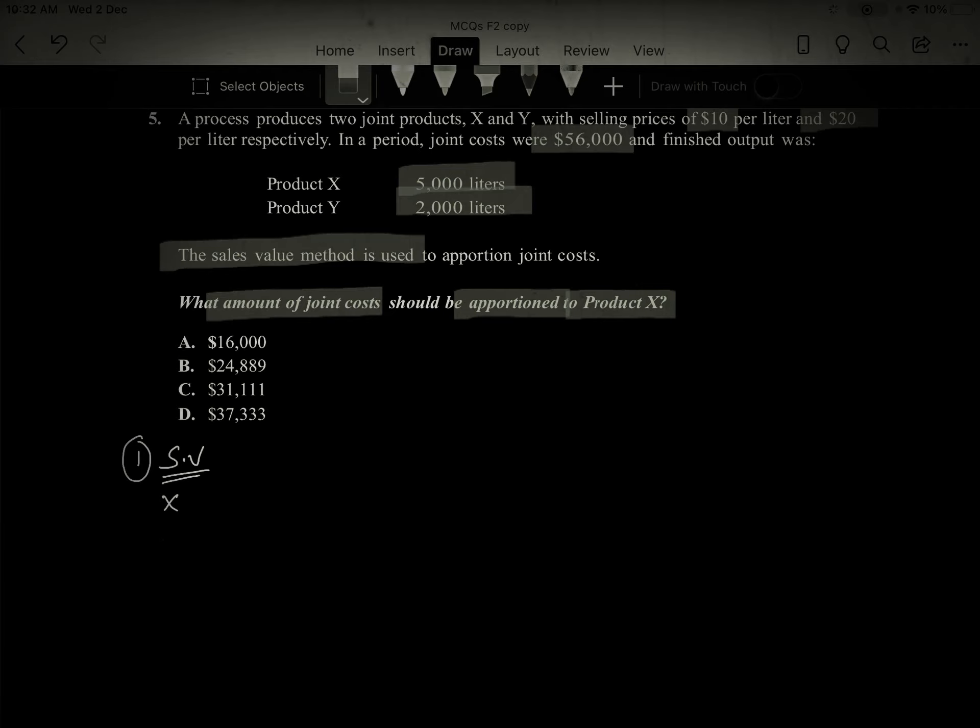Sometimes the examiner gives production and sales units, and people get confused. Sales value should be based on units sold, not units produced, because units produced may not all be sold.